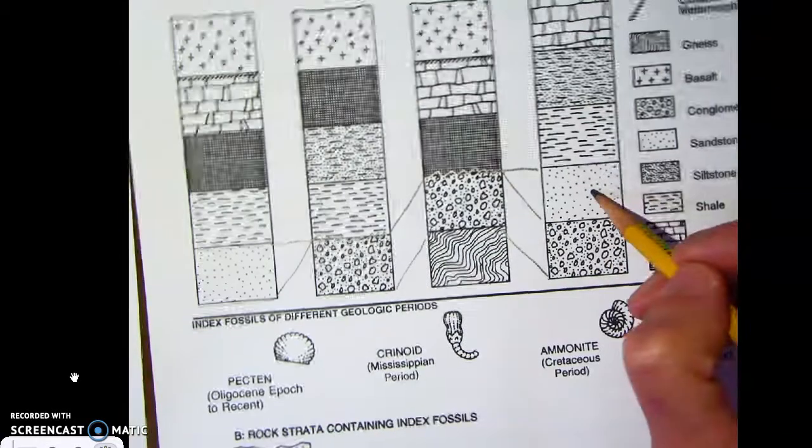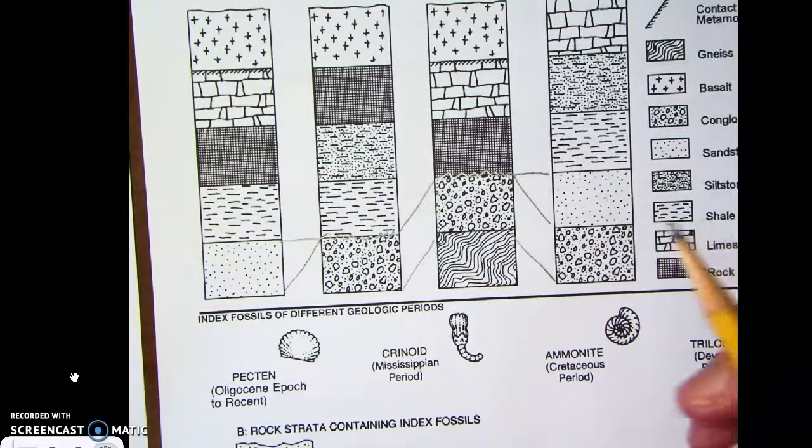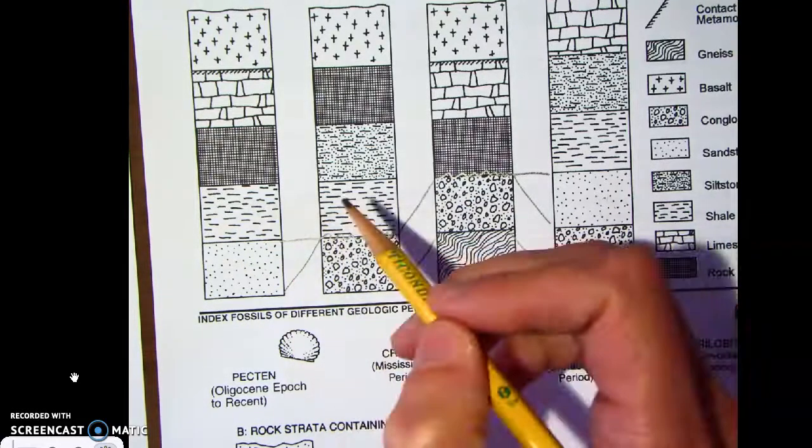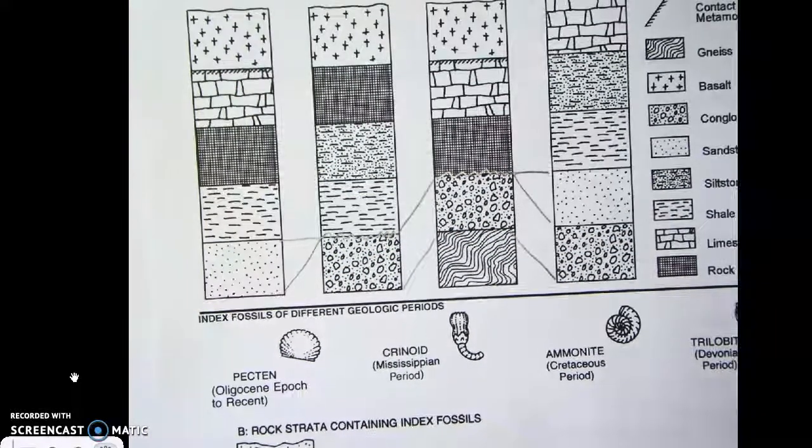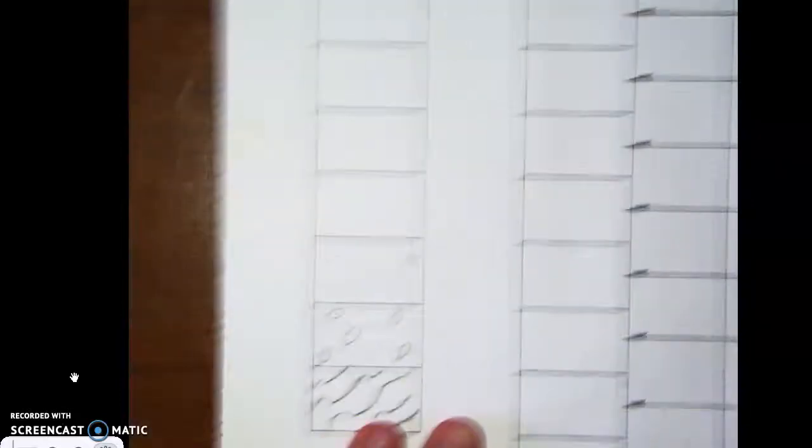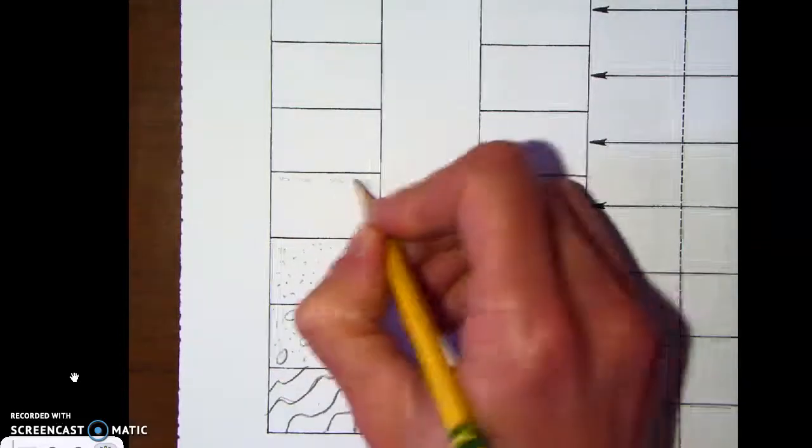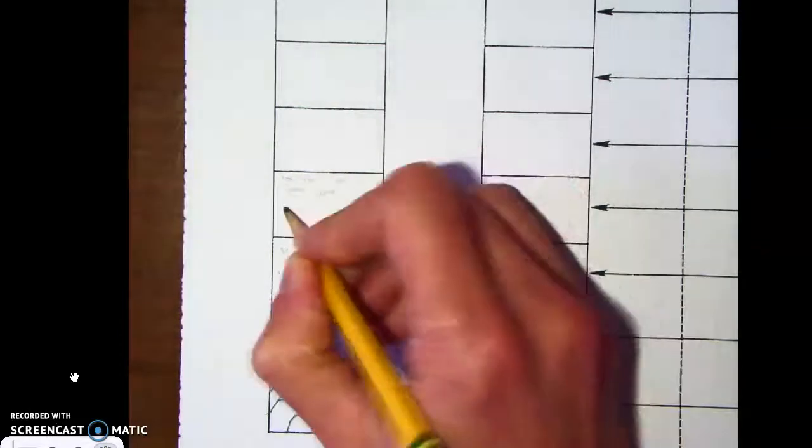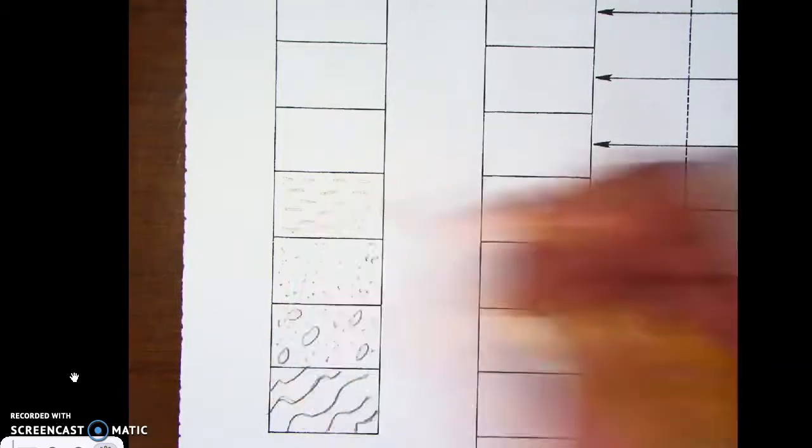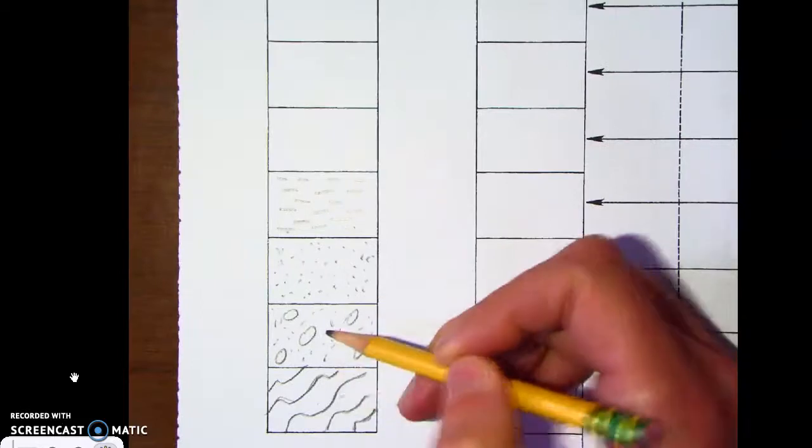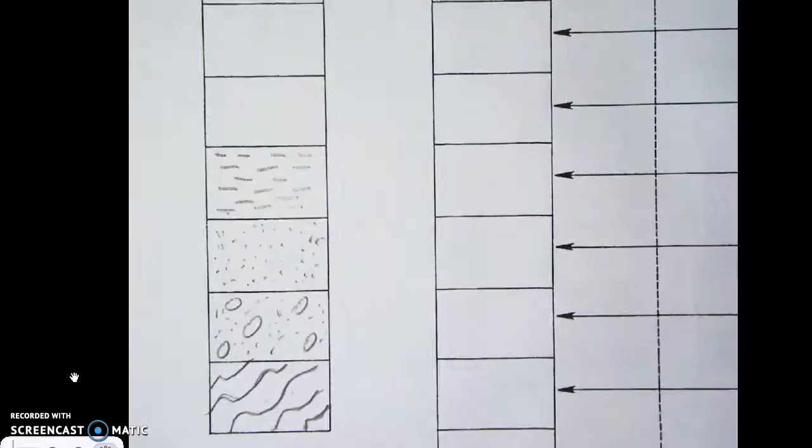Now over here we have sandstone followed by shale, and over here we have sandstone followed by shale also. So that would indicate the next layer is probably the shale. So now we're going to move up to the next layer and I'm going to be drawing small dashed lines to show shale. So there we've got the shale. Right, so now we've got gneiss, conglomerate, sandstone and shale moving up.